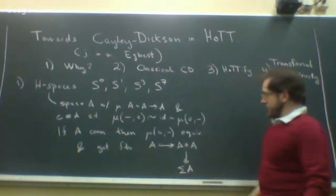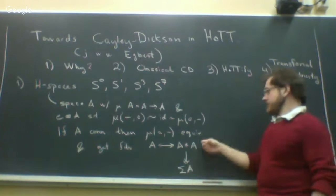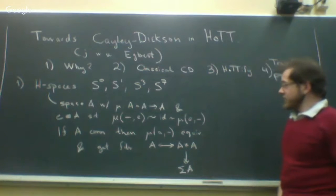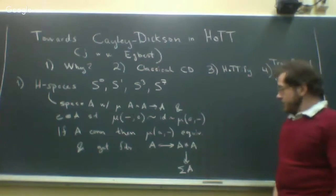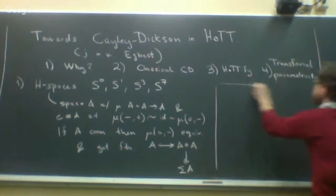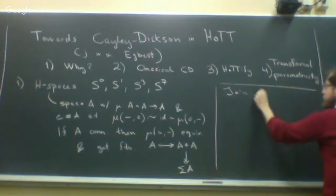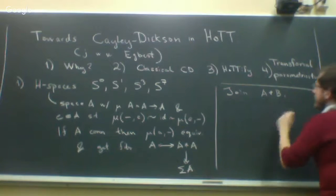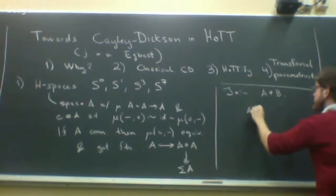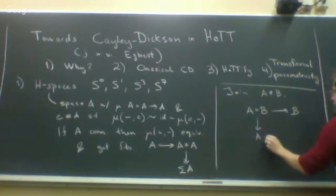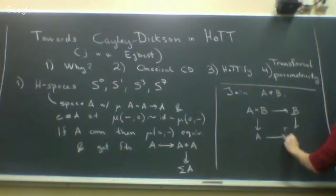The fibers are A, and you can prove using a flattening lemma for pushouts that the total space is A join A. The join of A and B, as types in HoTT, is the higher inductive type formed by the pushout along the two projections. In a picture, you have A here and B here, and for every pair of a point in A and a point in B, you make a path.